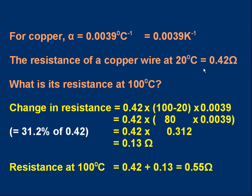Let's work out the change in resistance going from 20 to 100. We do this by multiplying the resistance at 20, 0.42 ohms, by the temperature change going from 20 to 100. The temperature change is therefore 100 minus 20. And multiplying all of that by alpha, the temperature coefficient of resistance, 0.0039. So we'd get 0.42 times 80 times 0.0039. Now 80 times 0.0039 is 0.312. So we've got 0.42 times 0.312.